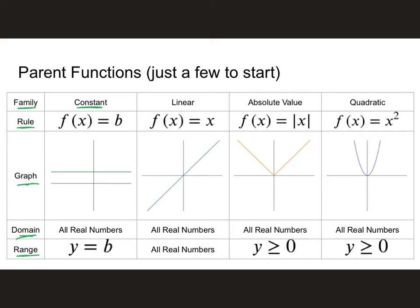So let's go back and talk about our constant function: f of x equals b. It doesn't have to be b — it could be any number you want. We just use b for a specific reason. Let's pretend it's a number like two, so f of x is equal to two. If I think about a table of values — x and y — remember, f of x is just a fancy way of writing y.